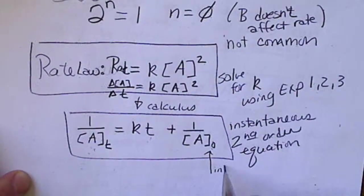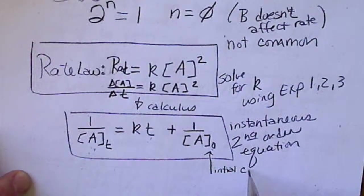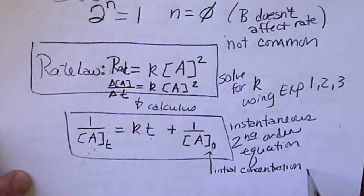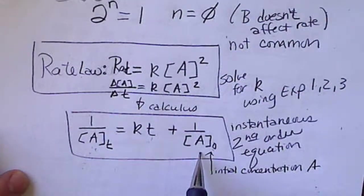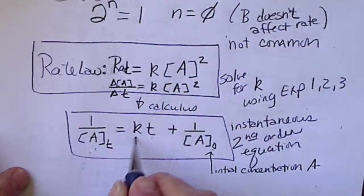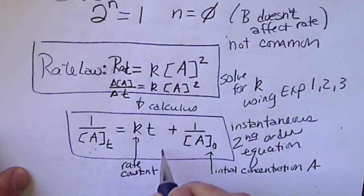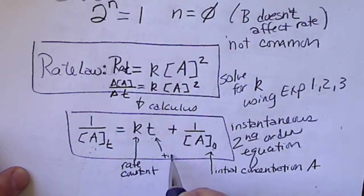This is the initial concentration of A. So, we're the ones that have control over that because we make it up in the lab. This is still the rate constant. T is the time that has elapsed.